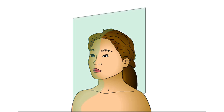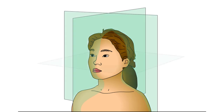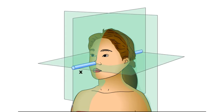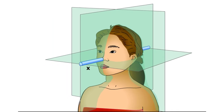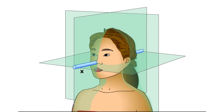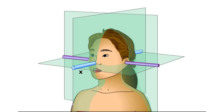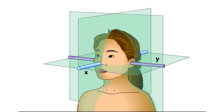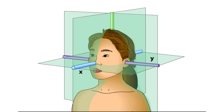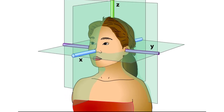All bodies moving in three dimensions have six degrees of freedom. Three of these are translational, and three are rotational. The translational components may be given in terms of movements along the X, Y, and Z axes of the head.